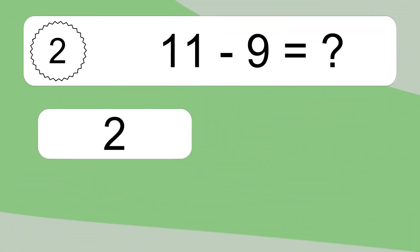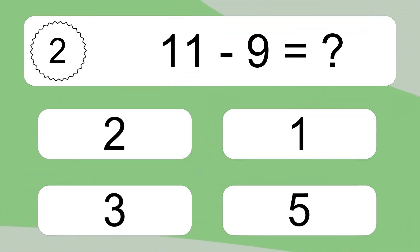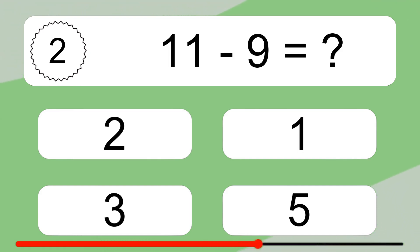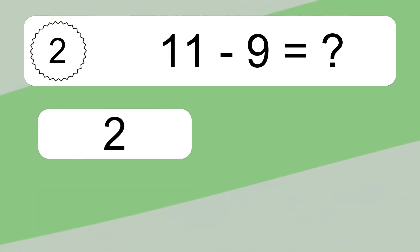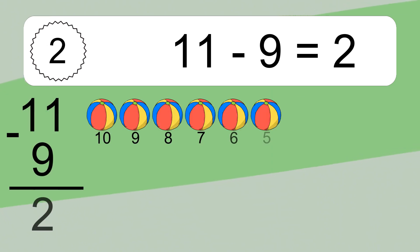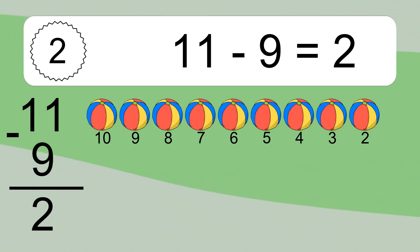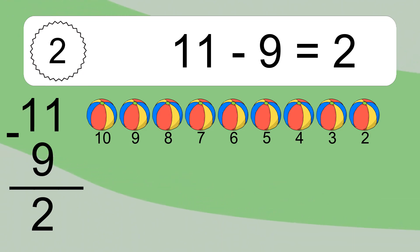11 minus 9 equals what? 11 minus 9 equals 2. Let's count it: 10, 9, 8, 7, 6, 5, 4, 3, 2.